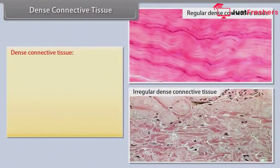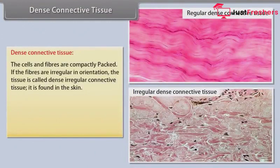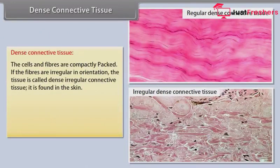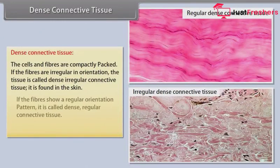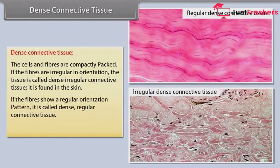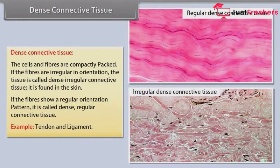Dense connective tissue has cells and fibers compactly packed. If the fibers are irregular in orientation, the tissue is called dense irregular connective tissue, found in the skin. If the fibers show a regular orientation pattern, it is called dense regular connective tissue — examples include tendon and ligament.